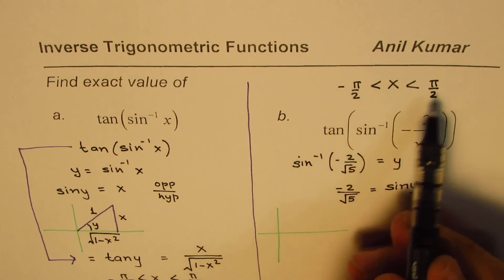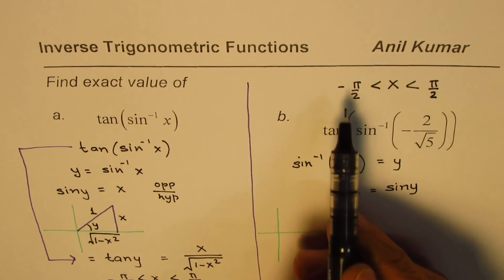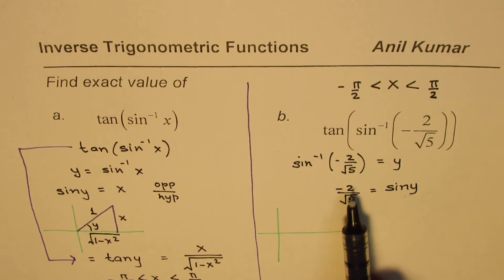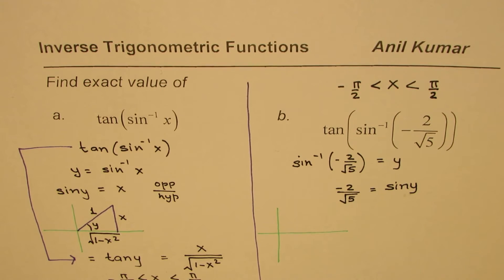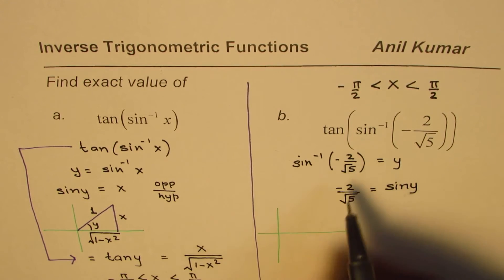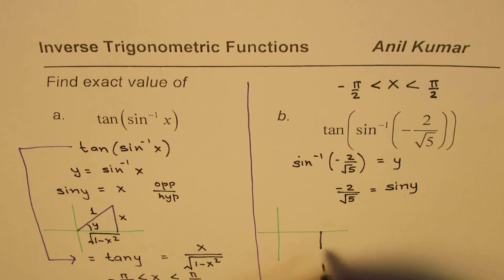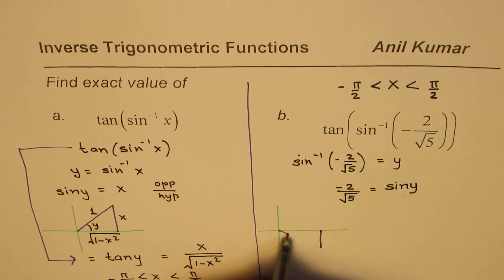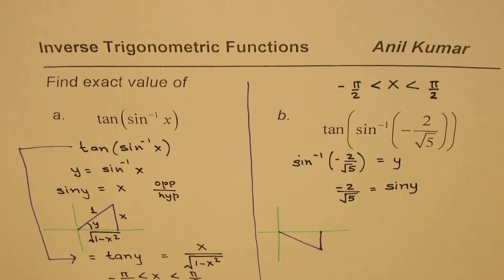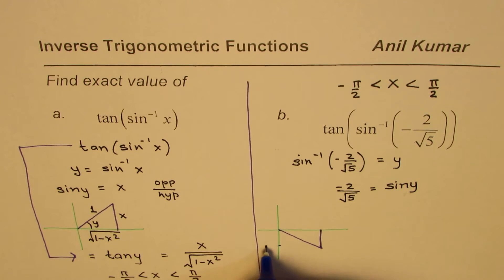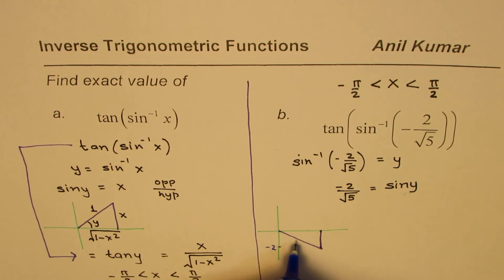Since at π/2 tan is not valid, so this whole function not including -π/2 and +π/2. Since this value is -2 over square root 5, it really means that the opposite side is kind of going downwards, we are in quadrant 4. So that becomes the triangle for us, and in this triangle this is -2 and this length of hypotenuse is square root 5.